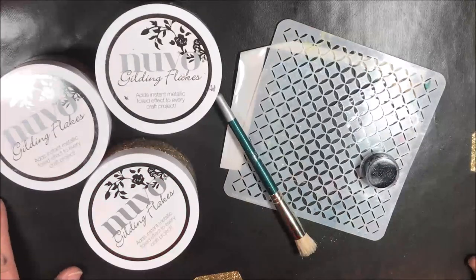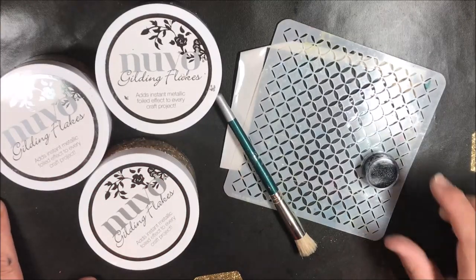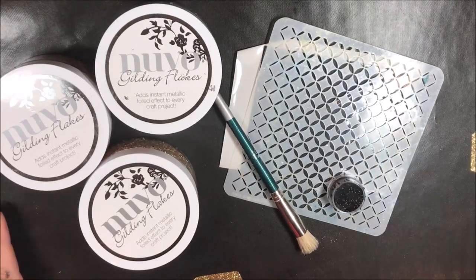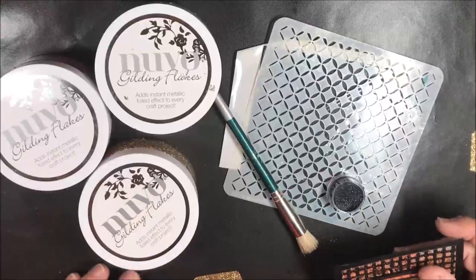Hi everybody, Pat Huntoon here from Technique Junkies. Today we're going to be using gilding flakes and a little bit of glitter with a stencil to create a pretty cool texture on a card.